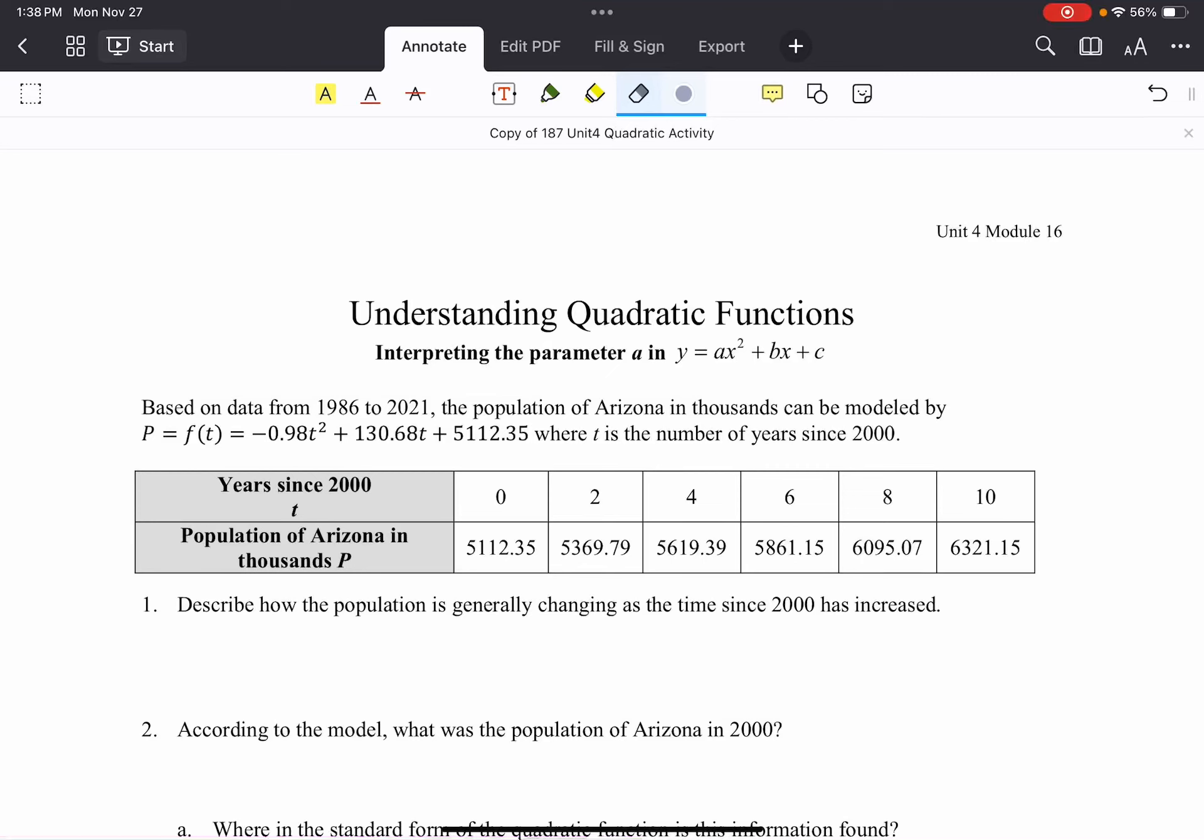This video is walking through the understanding quadratics function activity. Before this you should have gone through the example that looked at what makes a quadratic function quadratic, and through that you would have discovered that a quadratic function ends up having a constant second difference, and that second difference is actually the rate of change of the rate of change.